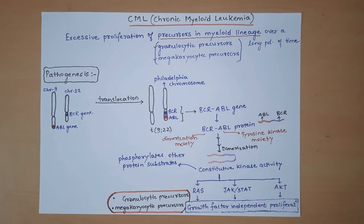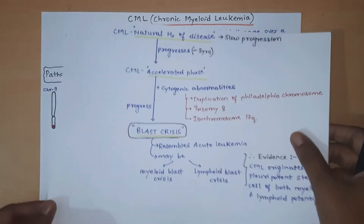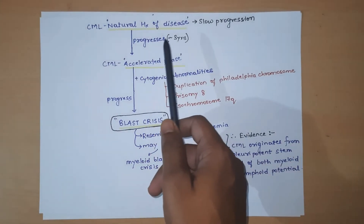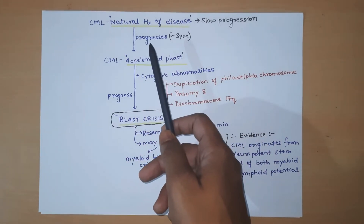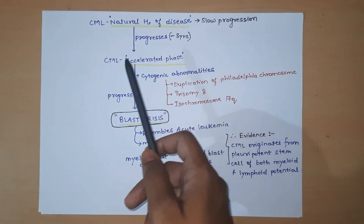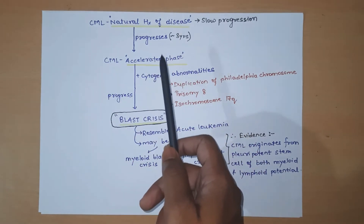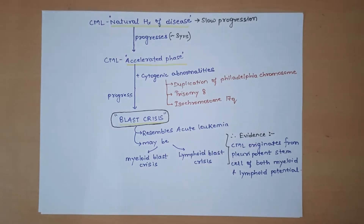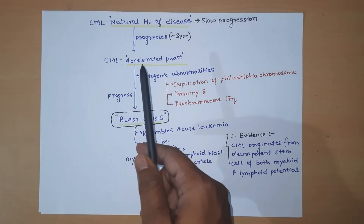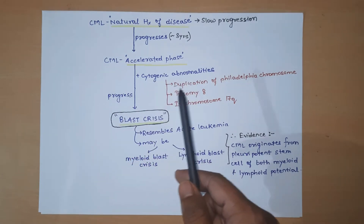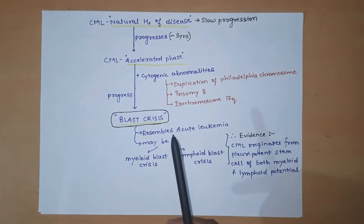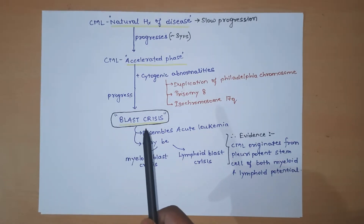As part of the natural history of the disease, CML progresses slowly because it is a chronic condition. Over a course of approximately three years without treatment, CML extends to the accelerated phase, where clinical features like anemia and thrombocytopenia worsen. When the patient in the accelerated phase is exposed to cytogenetic abnormalities — such as duplication of the Philadelphia chromosome, trisomy of chromosome 8, or isochromosome 17q — the accelerated phase progresses to blast crisis.